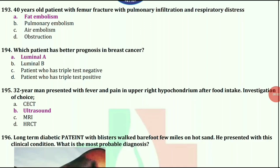40-year-old patient with femur fracture with pulmonary infiltration and respiratory distress — options are fat embolism, pulmonary embolism, air embolism, or obstruction. The correct answer is fat embolism.